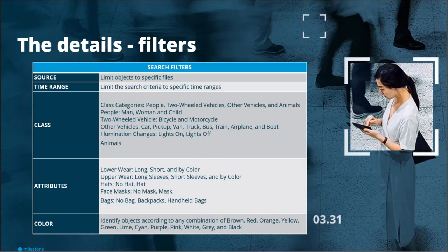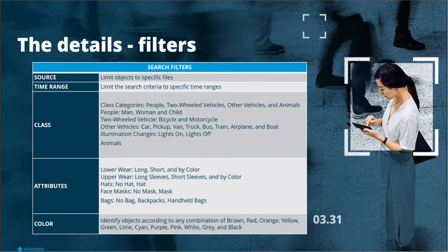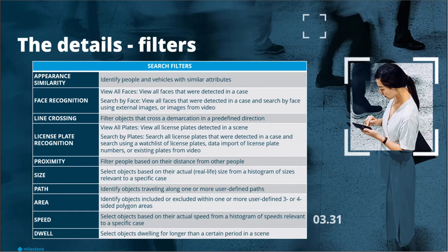We've said analytics and video processing a lot, but what does it actually mean? Simply put, video analytics is just the software — Rapid Review — watching the video, looking for objects. As it finds those objects, it writes them to a database. Think of it like Rapid Review seeing a person and checking: does that person have a shirt, what color is the shirt, what direction are they walking? All of that information gets stored into the database for quick searching afterwards, because it's much quicker to search a database than raw video files.